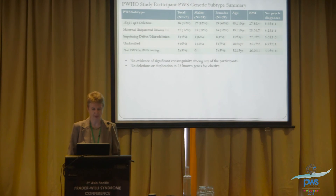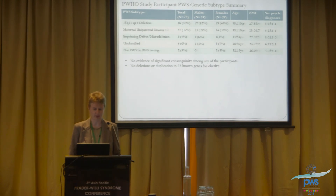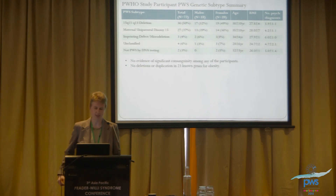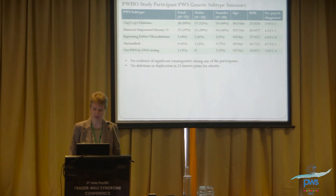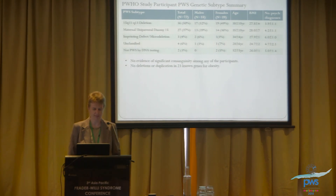50% had a deletion, 37% had UPD, 4% had an imprinting defect, and 6% were unclassified — with a plan to collect DNA from both parents to further clarify those cases. Only two individuals did not actually have Prader-Willi syndrome. We also examined age, BMI, and number of psychiatric diagnoses across subtypes. Overall, there was no consanguinity and no deletions or duplications in the 23 known obesity genes.